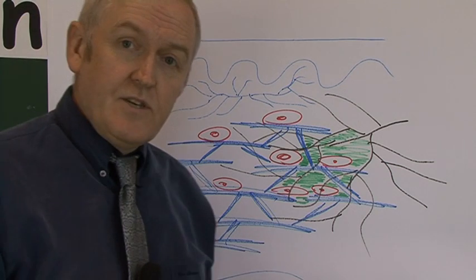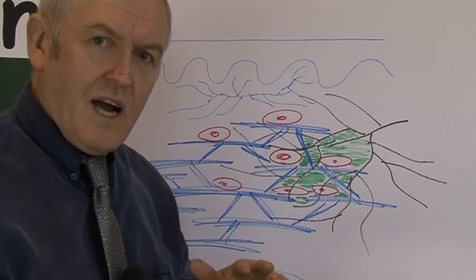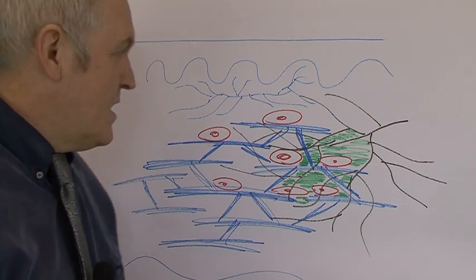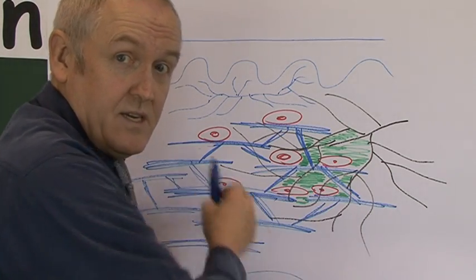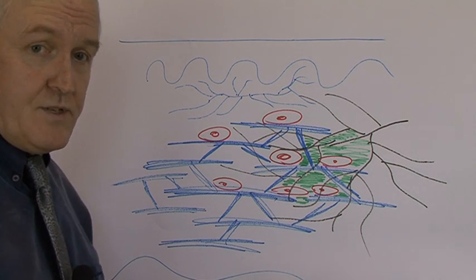And that's what gives the dermis body—it gives it a three-dimensional blown up structure. It's called skin turgor: the turgor, the pressure of the fluids inside the skin giving it its body.